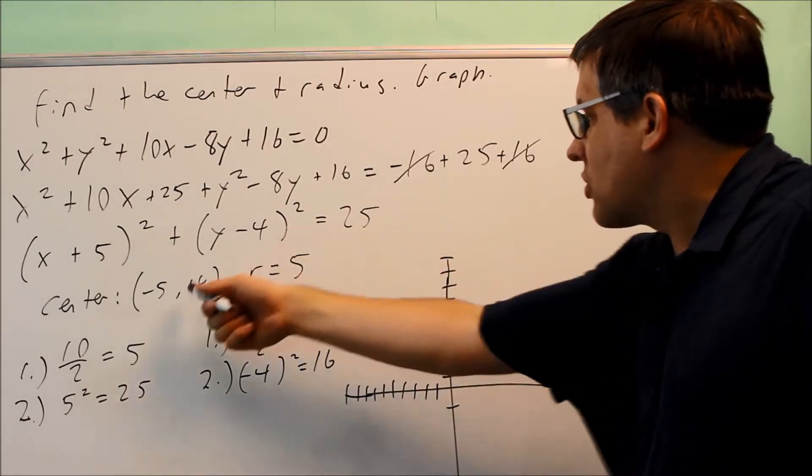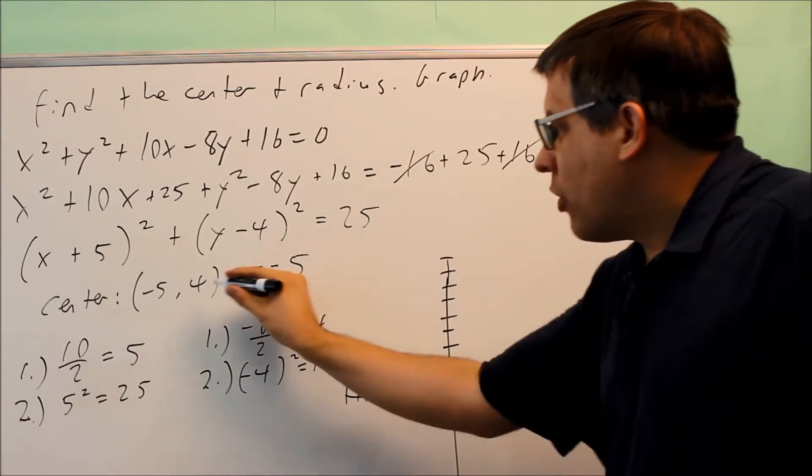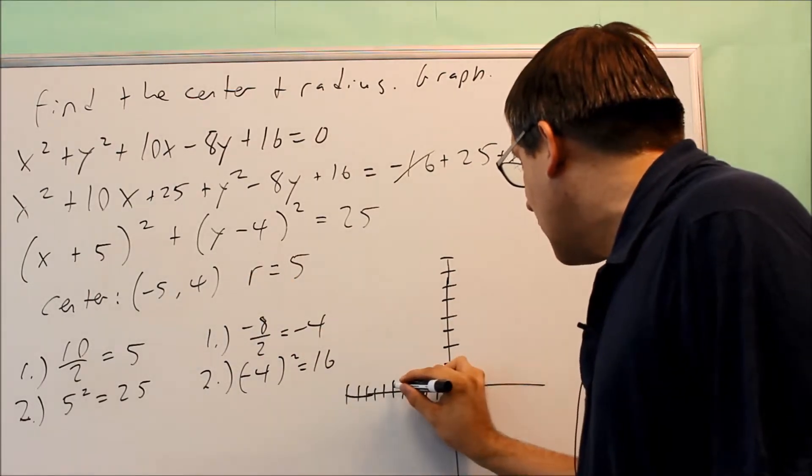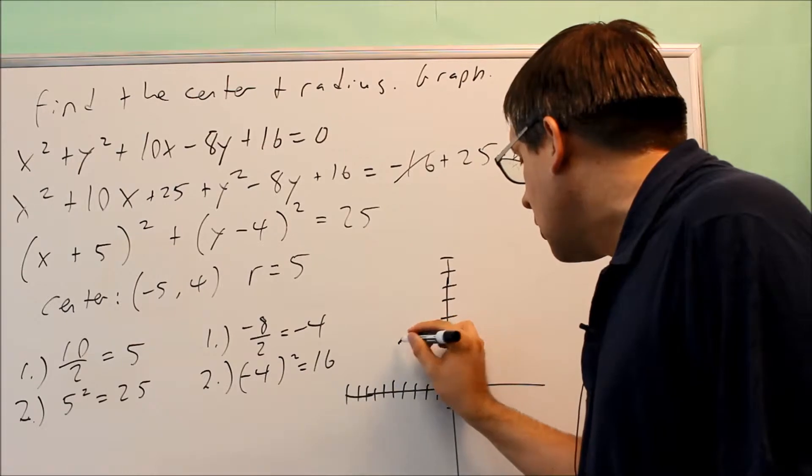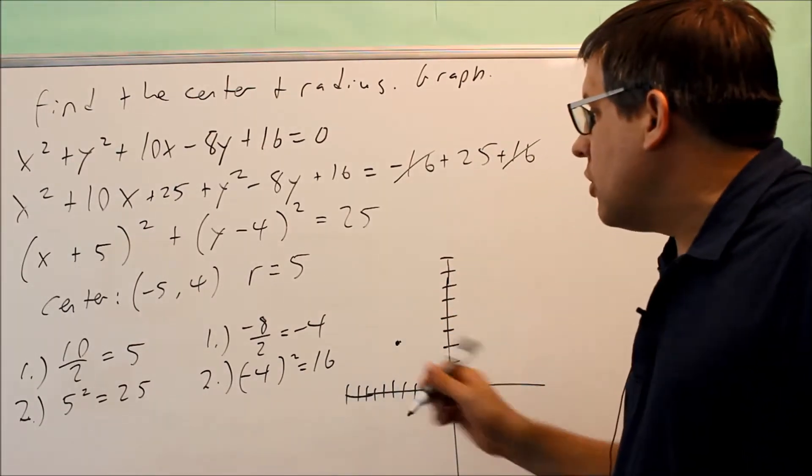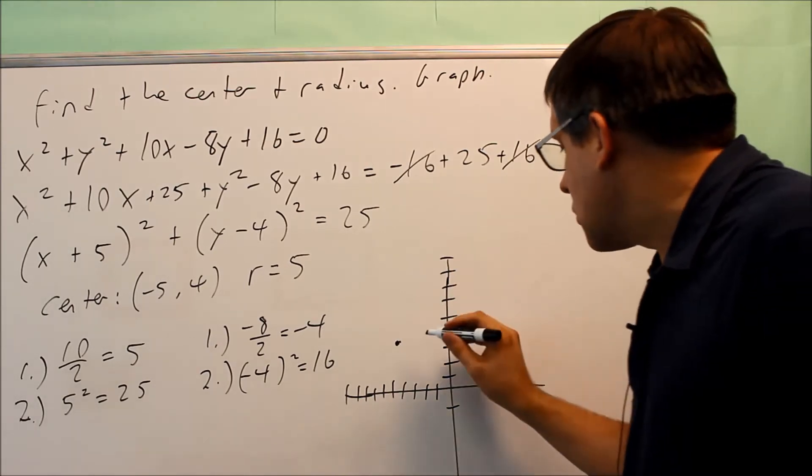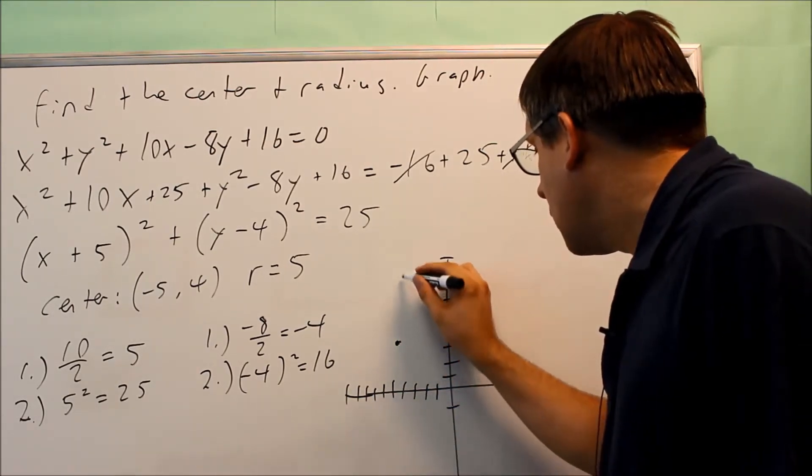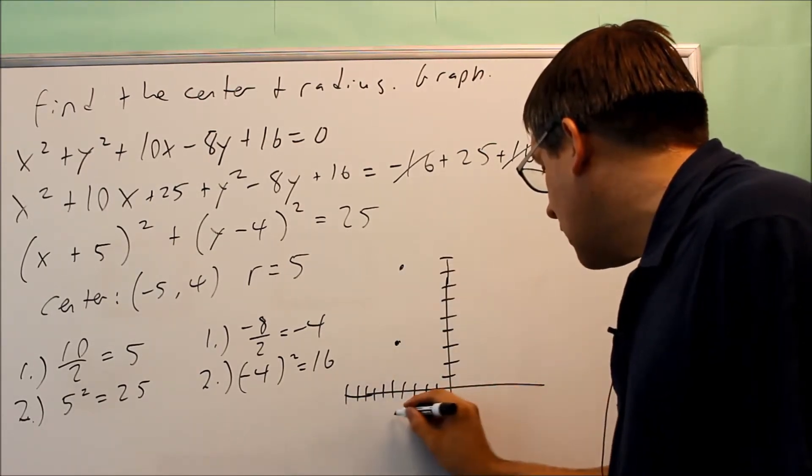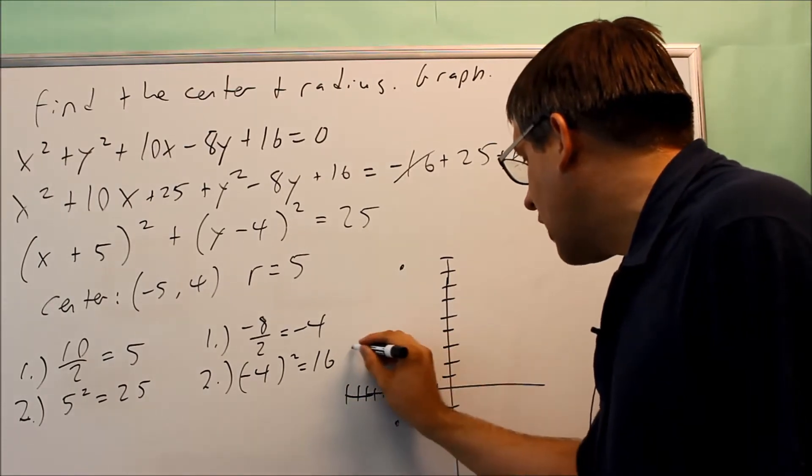Now that I have this complete, I'm ready now to do the graph. I want to first start with my center. Negative 5 and 4 will be right here. And then I need to go up, down, left, and right 5 because that's my radius. So I'm going to go up 5. I'm going to go down 5 to the left 5.